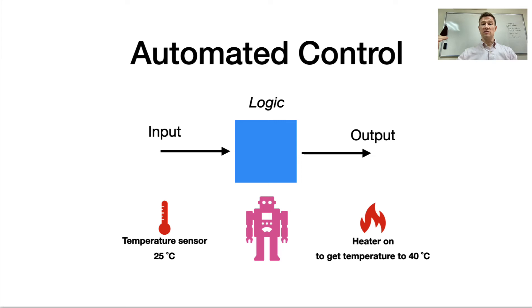And if the temperature goes above 40 degrees, then I'm going to turn off the heater. So that's some simple automated control. And this is something that you would have been able to do last semester based on the units that we studied together.